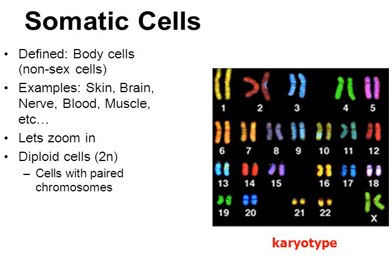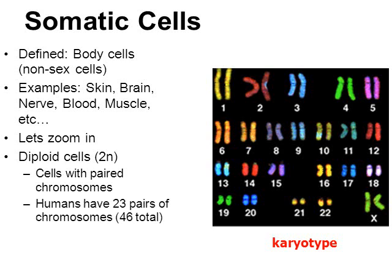Somatic body cells are also diploid. Diploid means they have paired chromosomes. In humans, there are a total of 23 pairs of chromosomes, for a total of 46 chromosomes. 23 pairs adds up to 46 total chromosomes. Diploid cells are also created by the cellular division process known as mitosis.